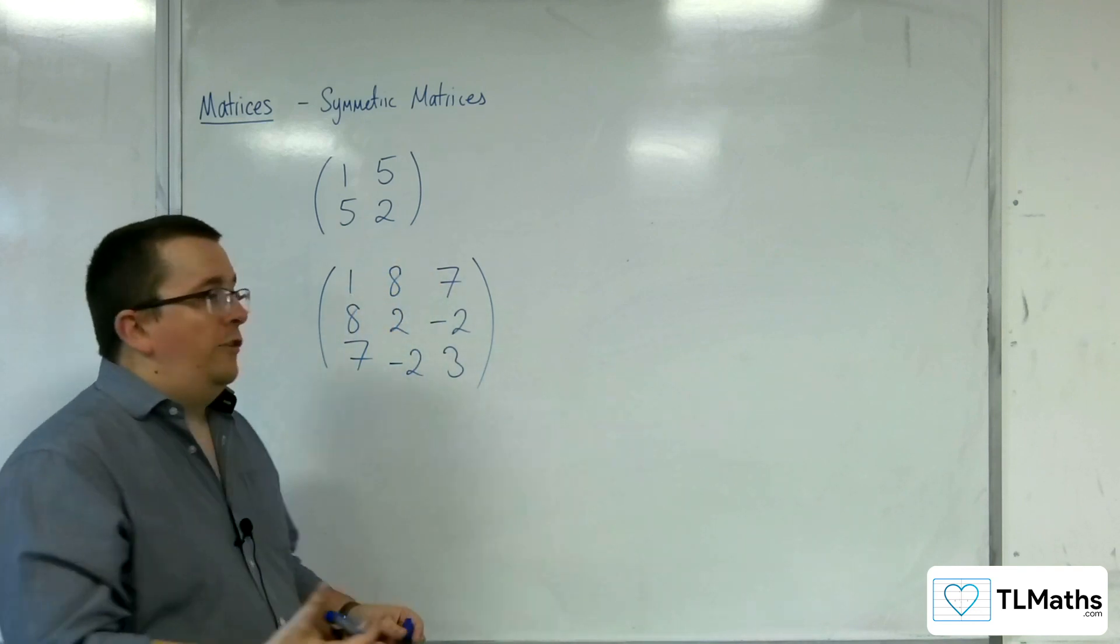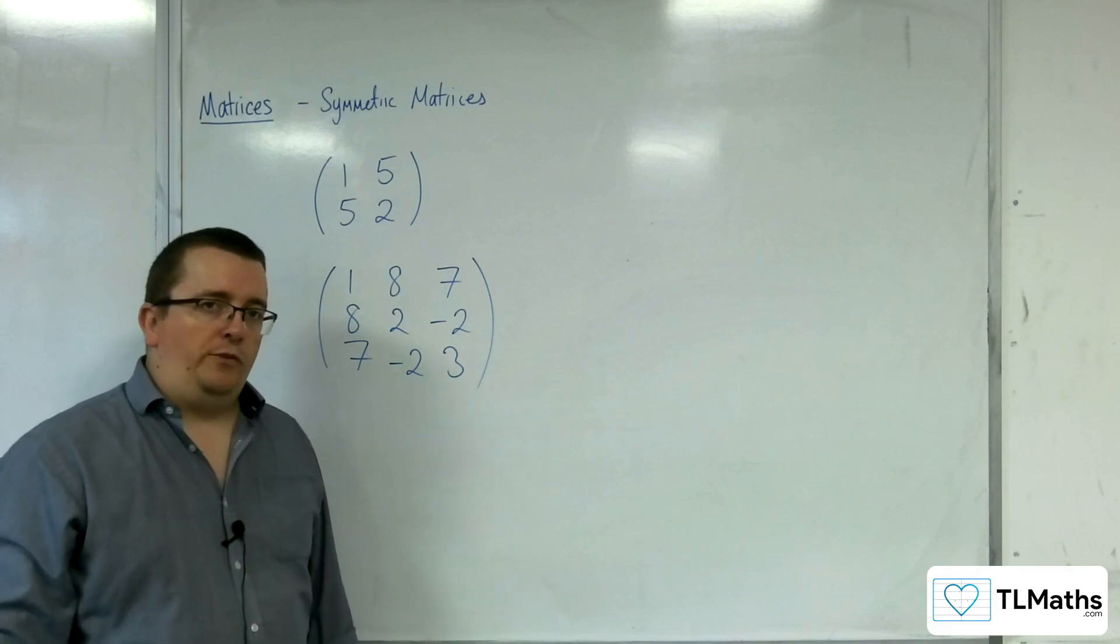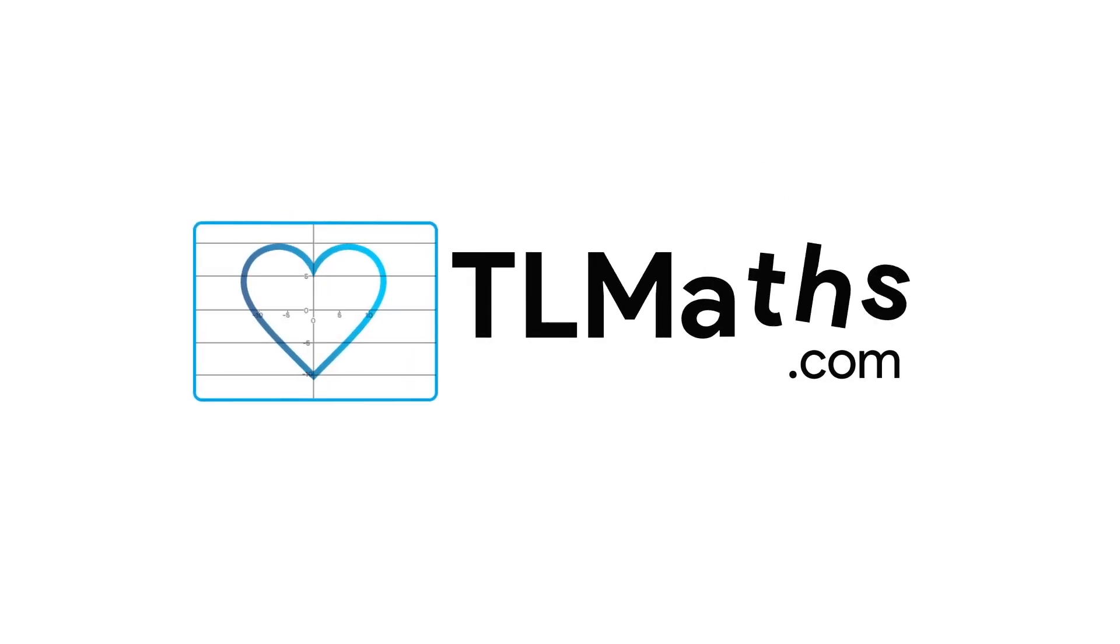And so both of these are examples of symmetric matrices. For a 4x4, then if you have 6 there, we'd have to have 4 there.